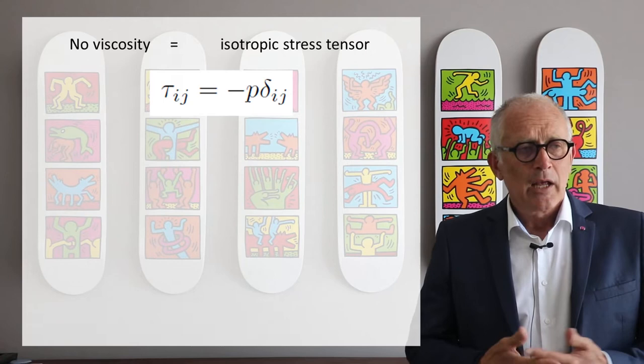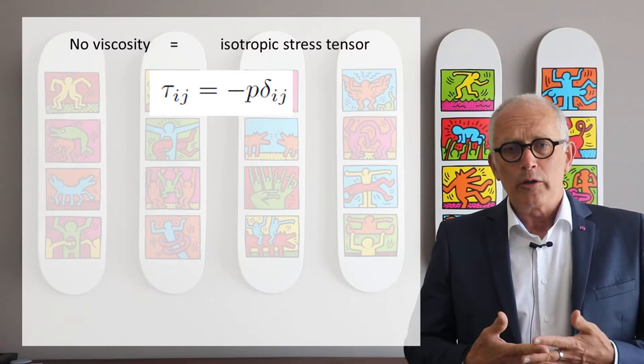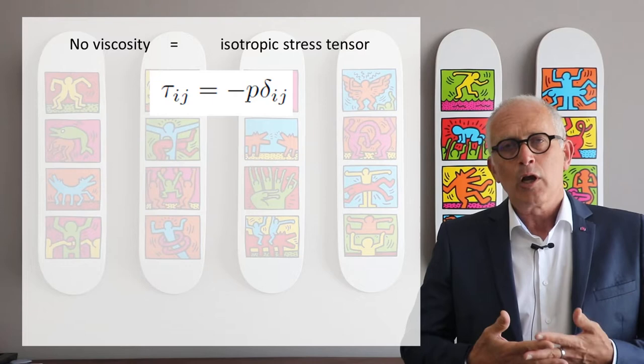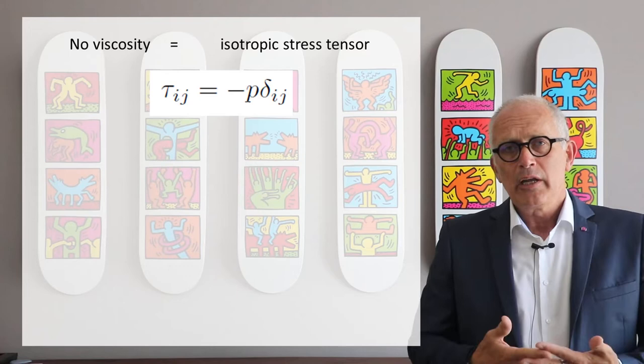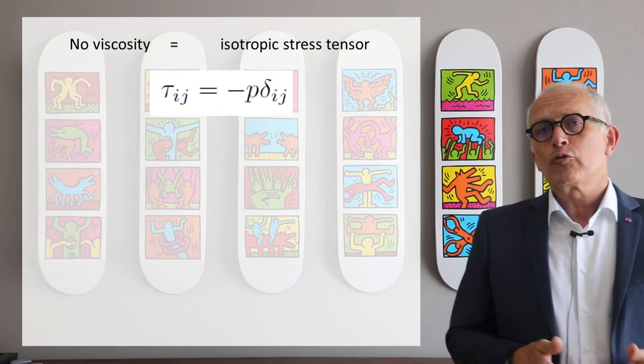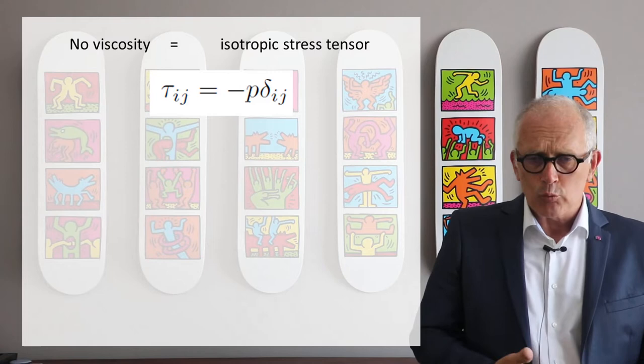The first one is that the fluid is non-viscous. If a fluid is non-viscous, there can be no shear stress effects. And therefore, the stress tensor reduces to its diagonal form with exactly the same value in all directions. So we have an isotropic stress tensor with just one scalar unknown, which is the pressure. So the pressure will be our key unknown in these equations.